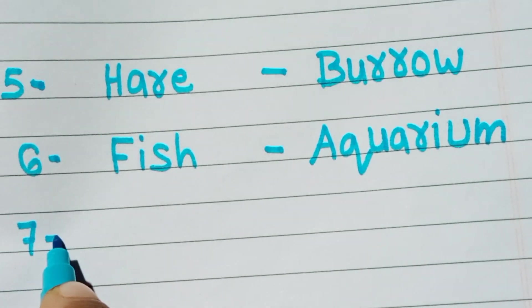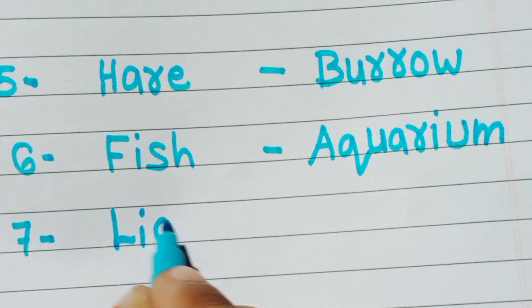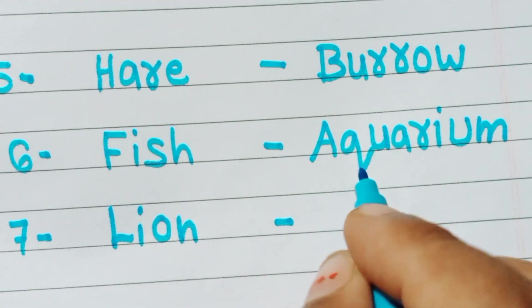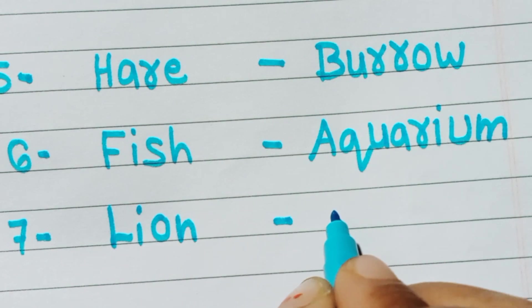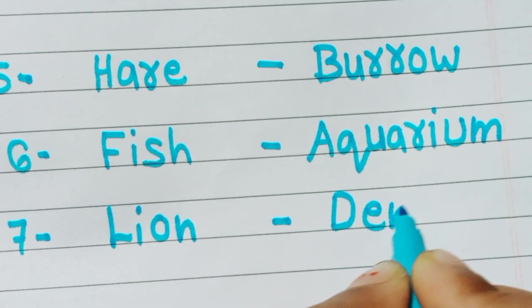Seventh number is lion, l i o n. Lion home name is den, d e n.